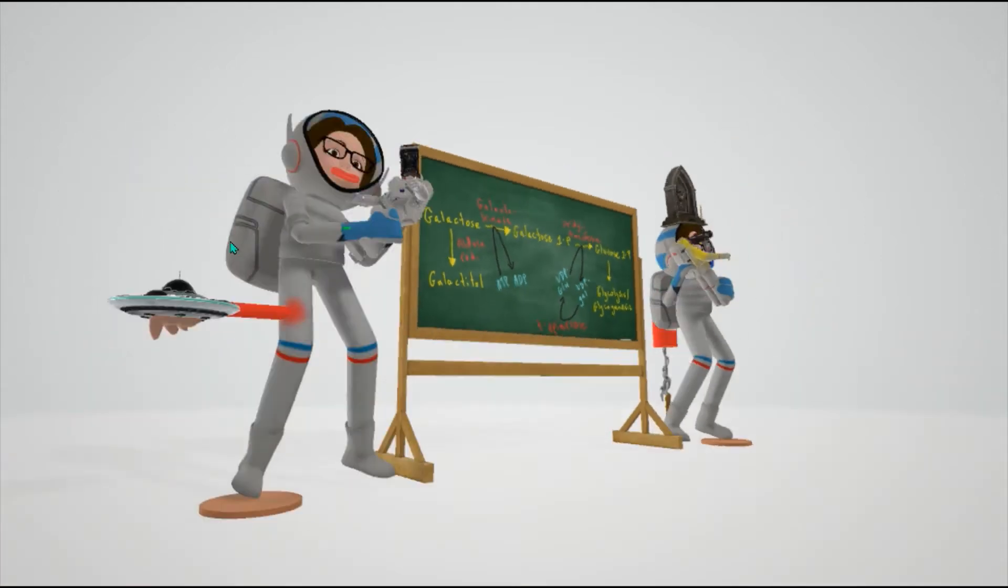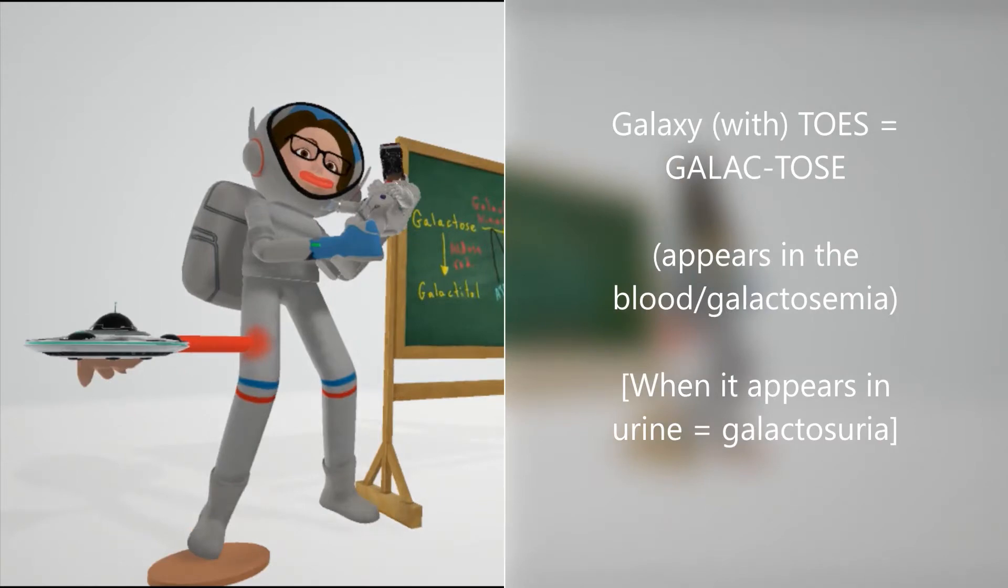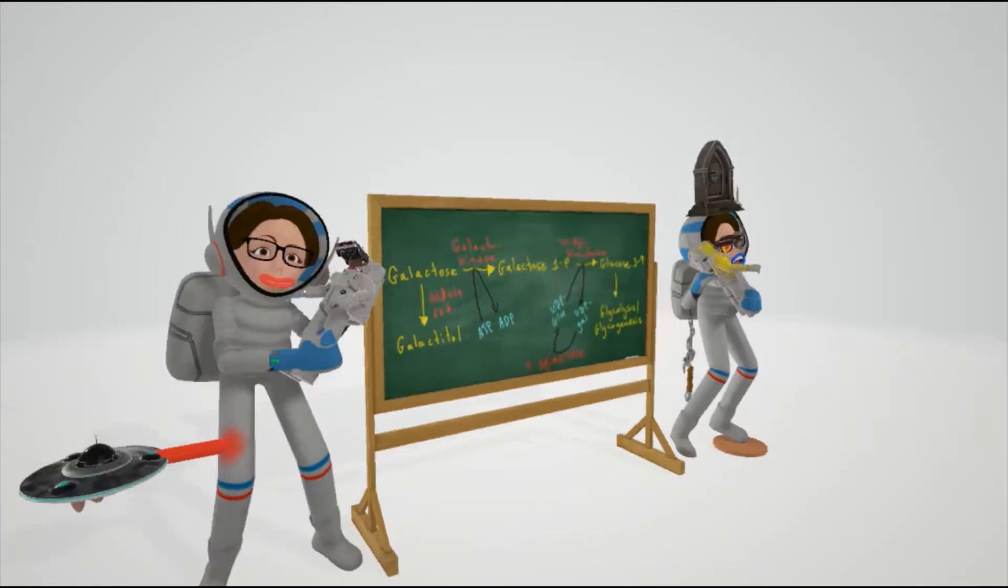Let's talk about symptoms. There's this galaxy chip with toes - Galaxy Toes for galactose - coming out of her blood vessel. Remember that in this disease, galactose appears in the blood, known as galactosemia, and also clears the urine, known as galactosuria.